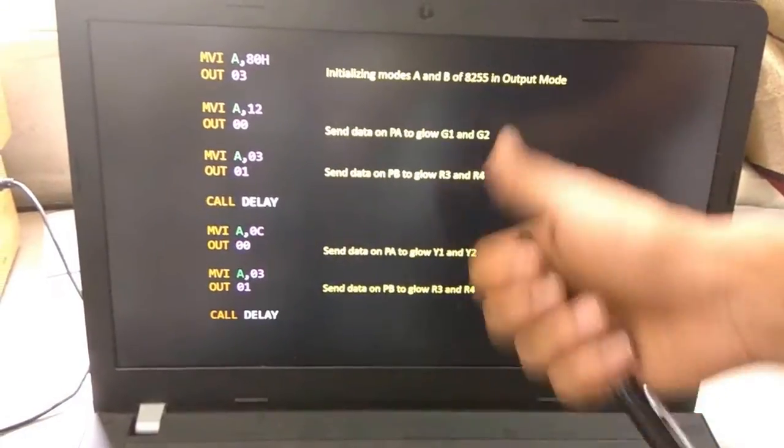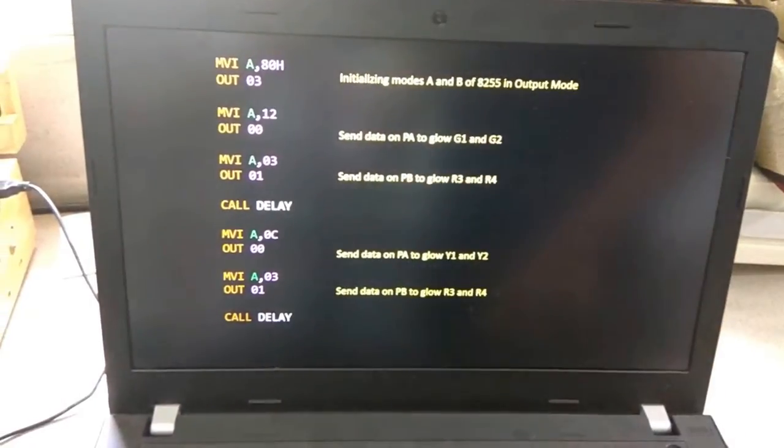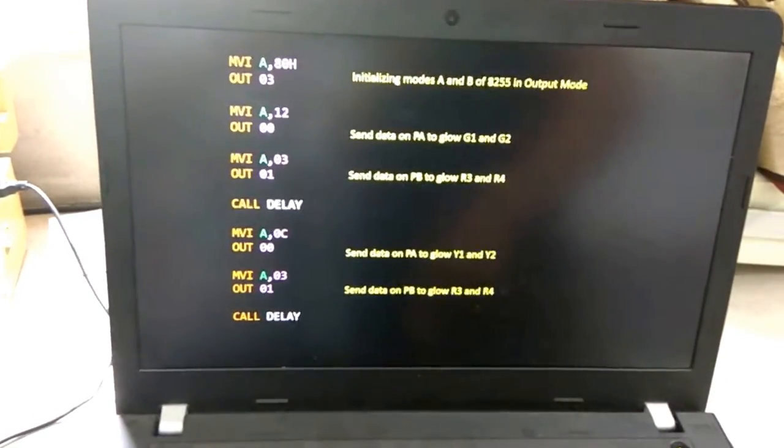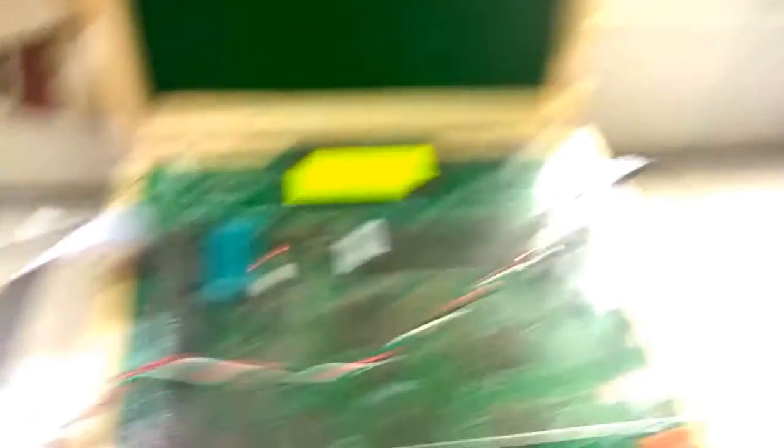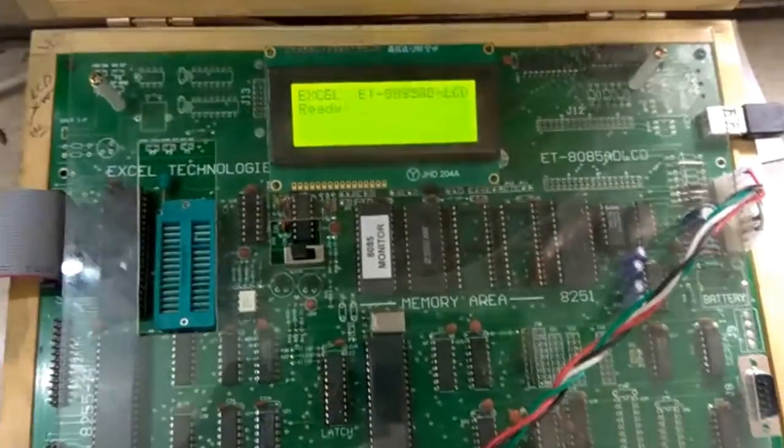This is the code for the type 2 crossing. I have already stored this code in the 2100 memory location of 8085. I will execute it from that location.